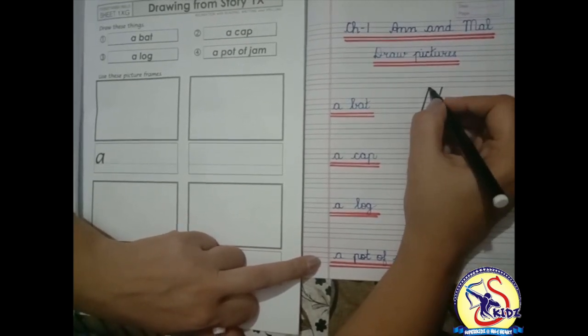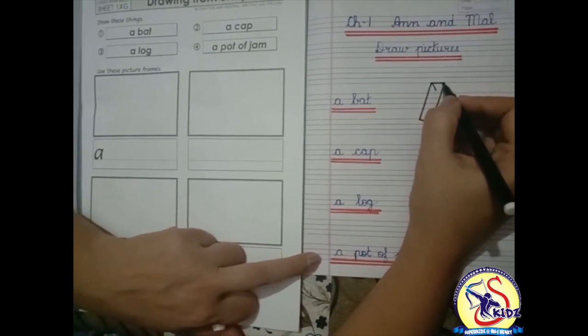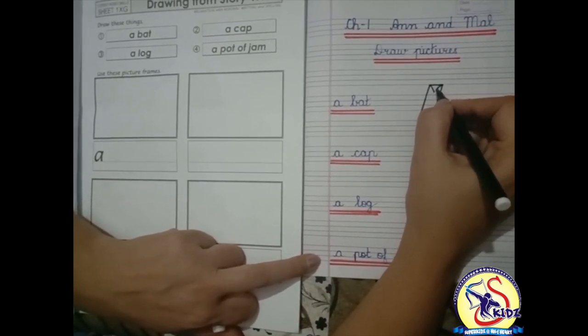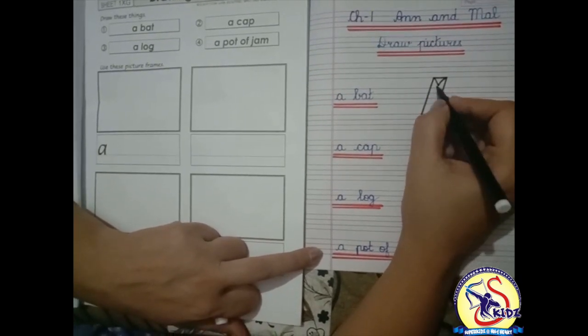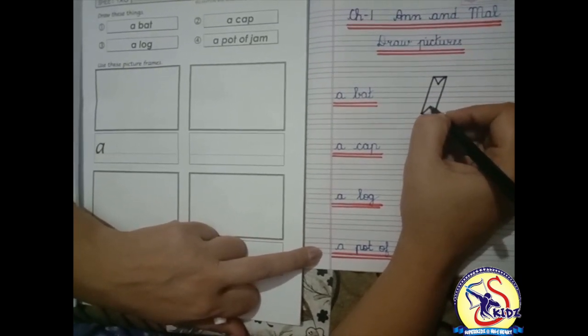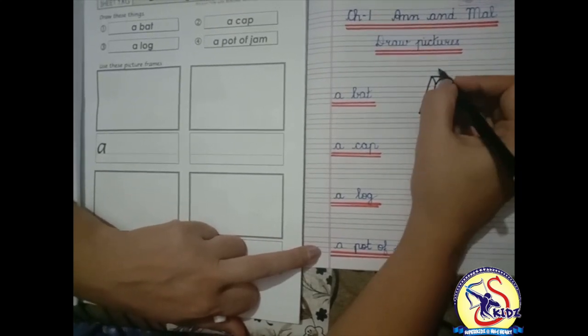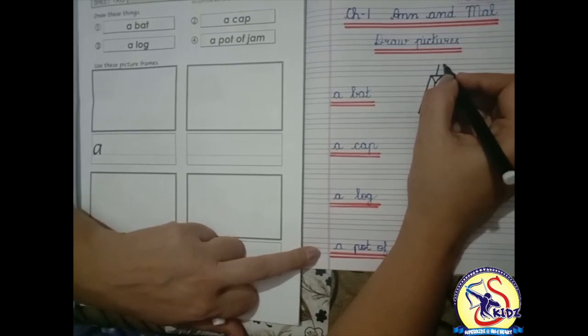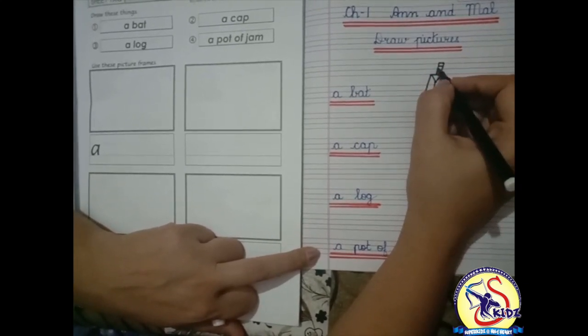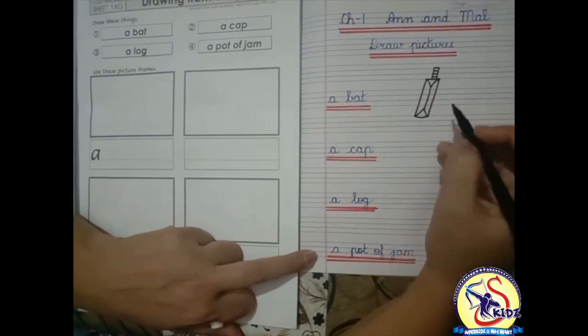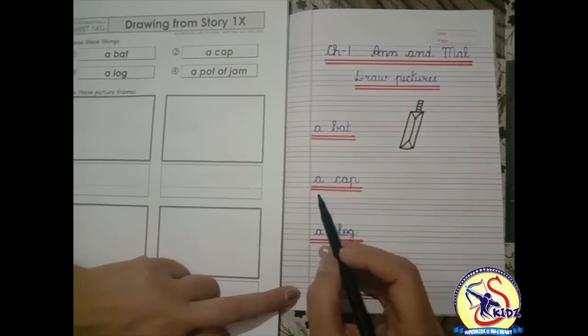these lines, again slanting line, one more slanting line. Two slanting lines, join them. So students, this is the picture of a bat.